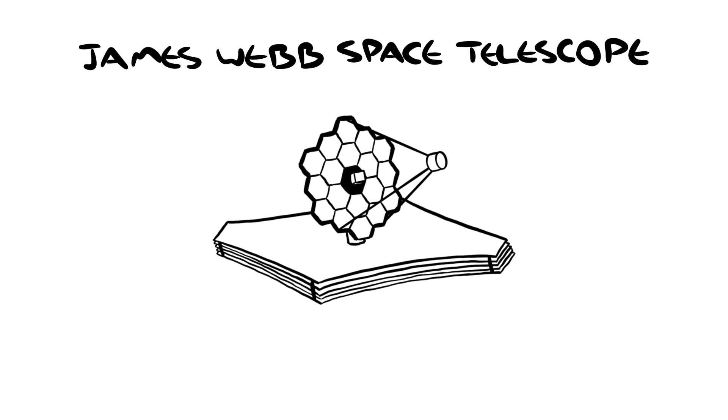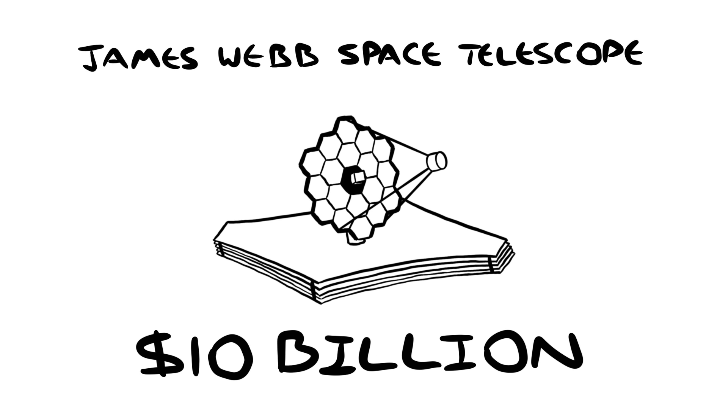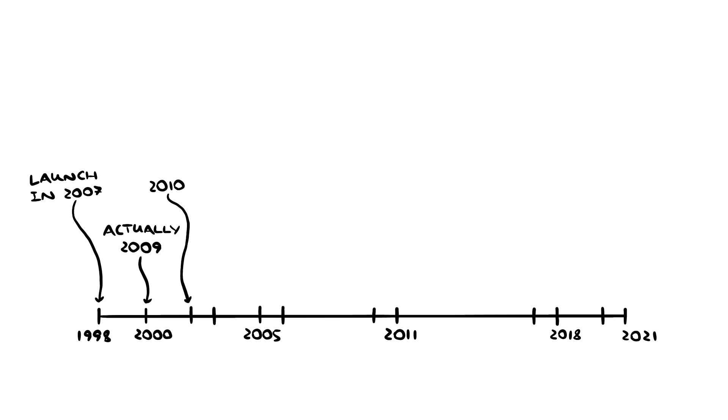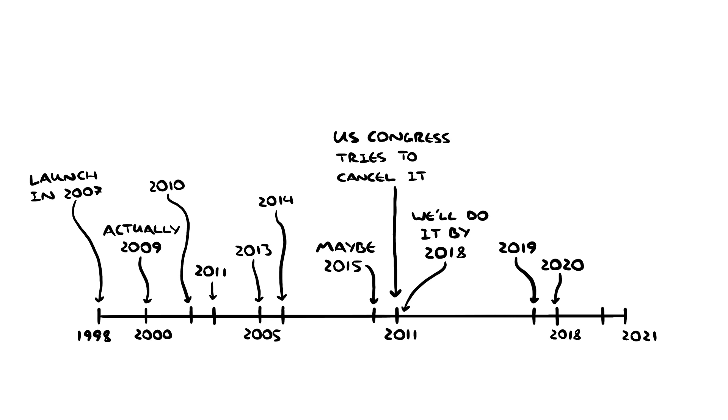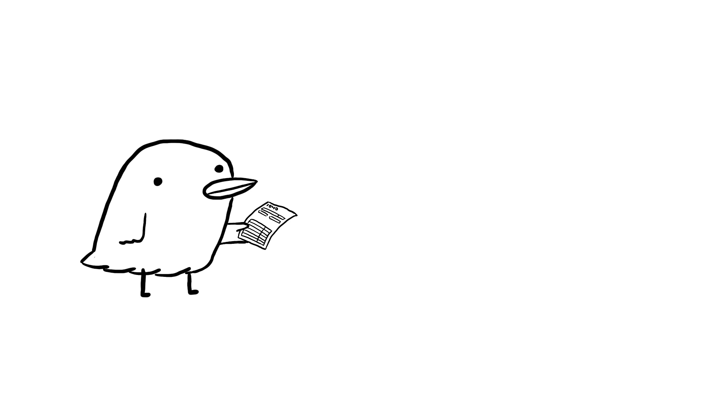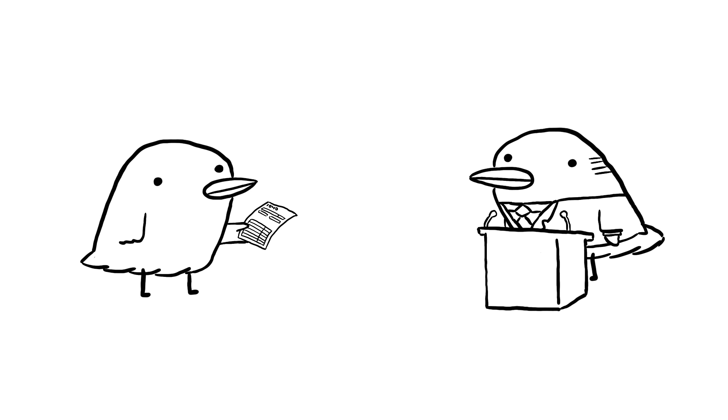The James Webb Space Telescope cost an enormous 10 billion US dollars. Over its 20 years of development, it was delayed and rescheduled so many times that its original launch plan for 2007 didn't happen until December 2021. Massive science projects like JWST have the unique challenge of convincing the average taxpayer or politician who might not know which end of a telescope to look into that the expense is worth it.